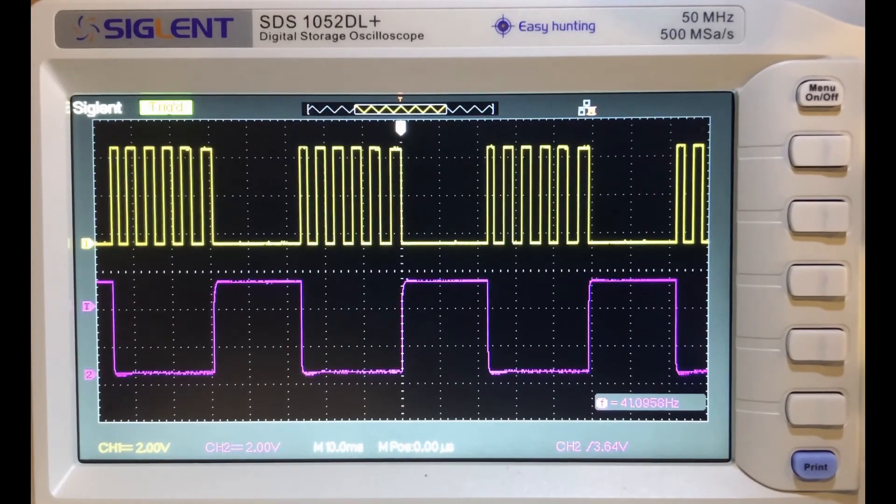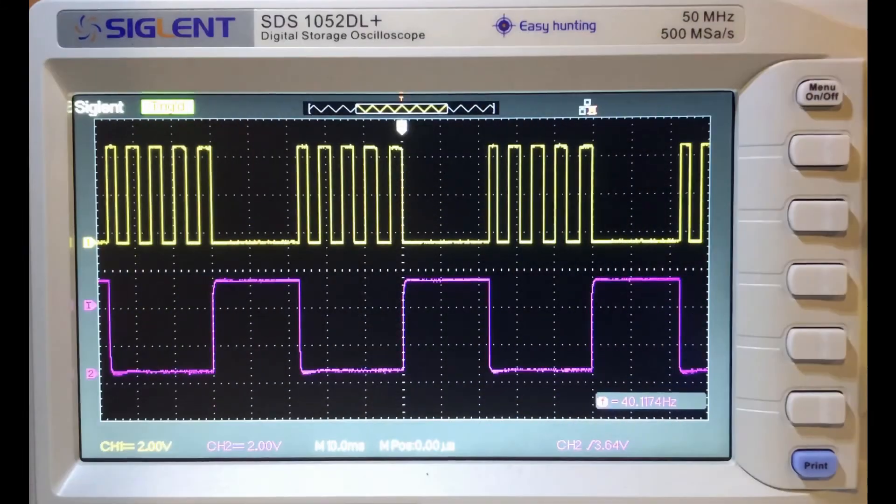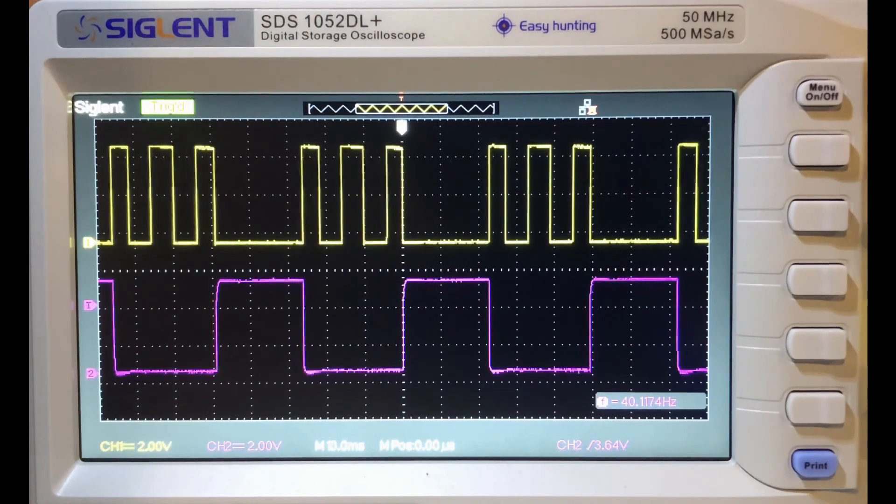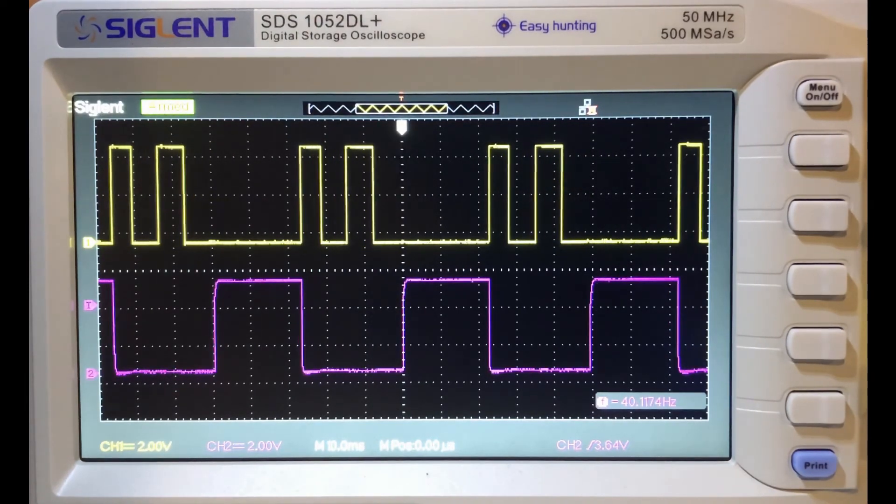We see here on the scope the clock signal and the modulated output of the VCO. Here we are changing the carrier frequency or the burst frequency.